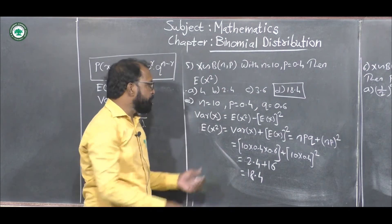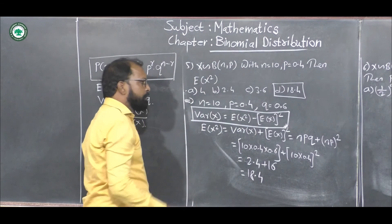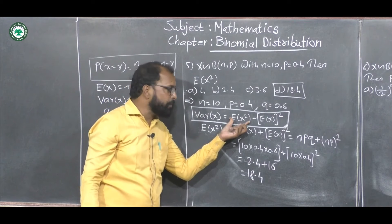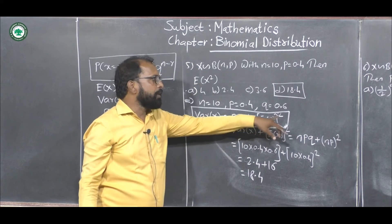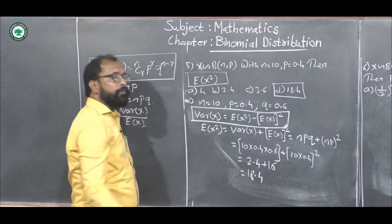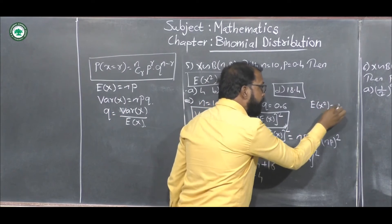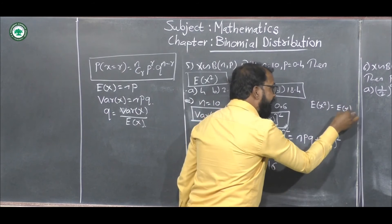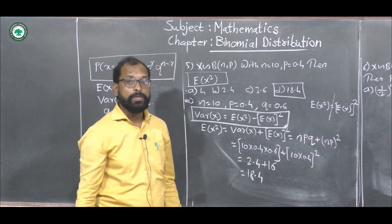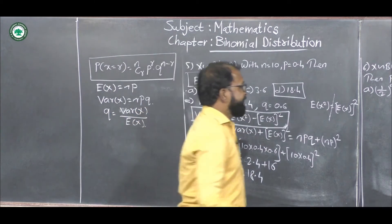The correct option is D, that is 18.4. For such examples, remember the formula: Variance of X = E(X²) − [E(X)]². Note that E(X²) and [E(X)]² are two different things — they are not equal.